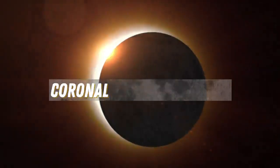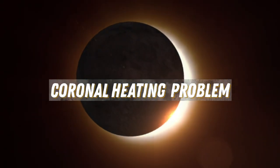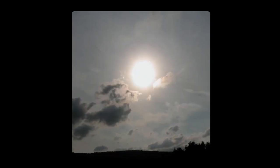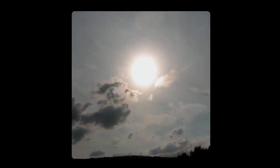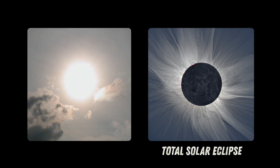Scientists call this the coronal heating problem, and evidence for this was first uncovered during an eclipse in the 1800s. The corona is usually hard to see. It's too dim to be seen next to the sun's bright body, but it can be seen with the naked eye when the moon blocks the sun during a total solar eclipse.